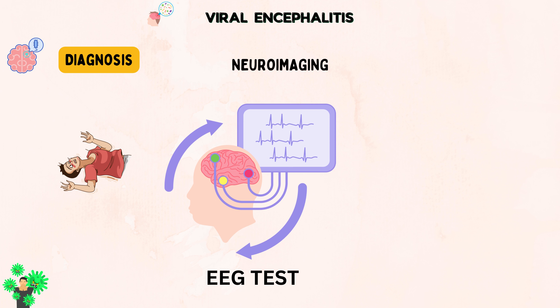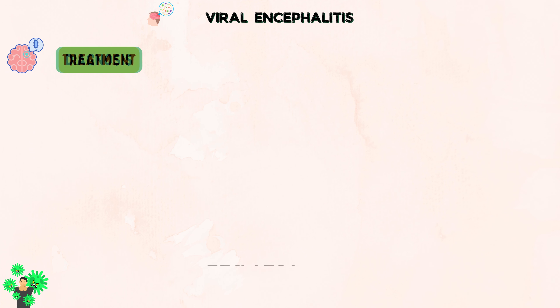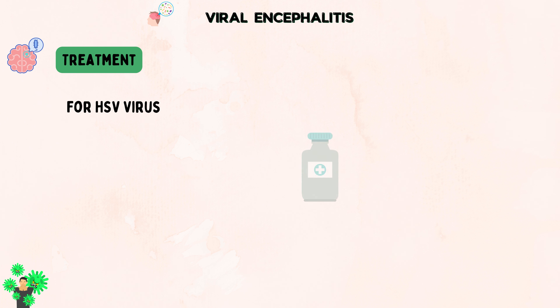Once the diagnosis is made, it's time to act. There isn't a specific medical cure for most viral infections affecting the central nervous system, so treatment for viral encephalitis mainly focuses on providing support. However, for herpes simplex virus encephalitis, there's a crucial exception. Early use of acyclovir has proven to notably reduce the risk of death and complications, lessening long-term behavioral and cognitive issues. That's why doctors usually start all patients suspected of having encephalitis on acyclovir as a precautionary measure.